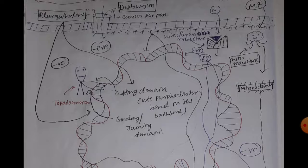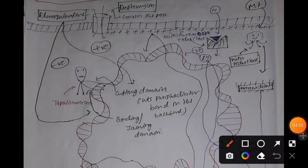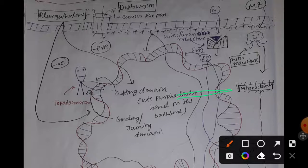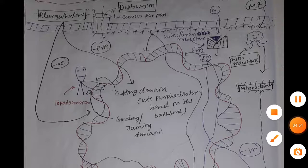During DNA replication, a replication fork is formed. This replication fork facilitates the formation of supercoiling in the downstream region of the DNA. So the replication fork facilitates supercoiling.